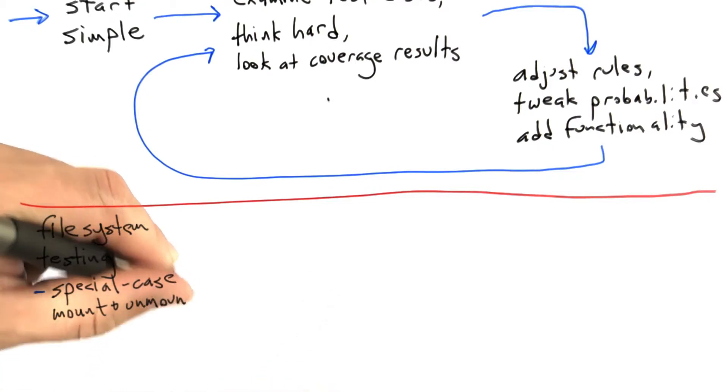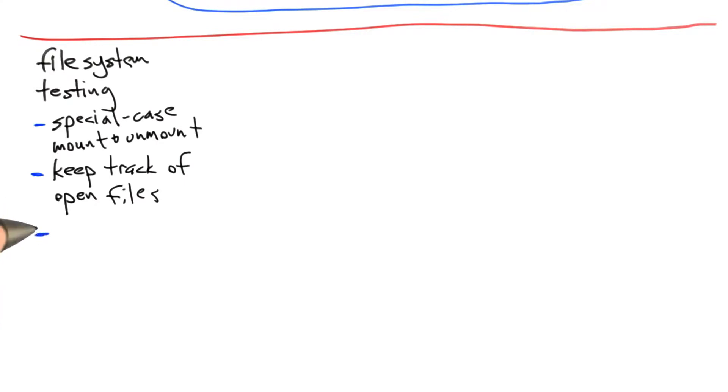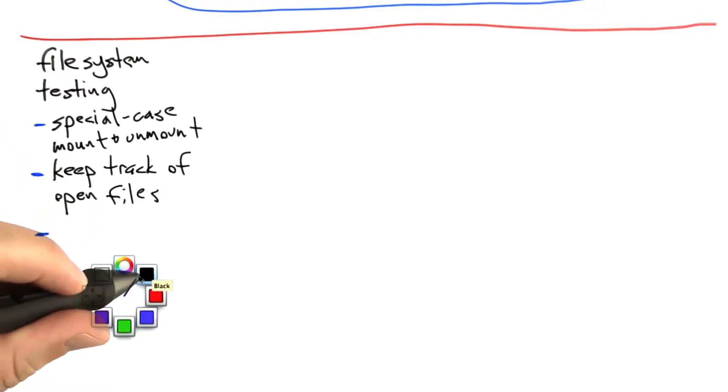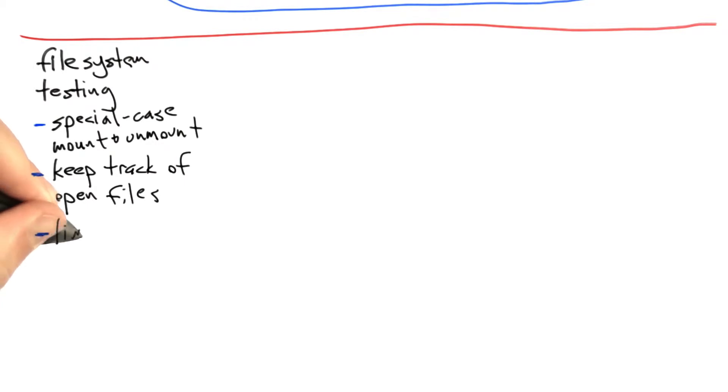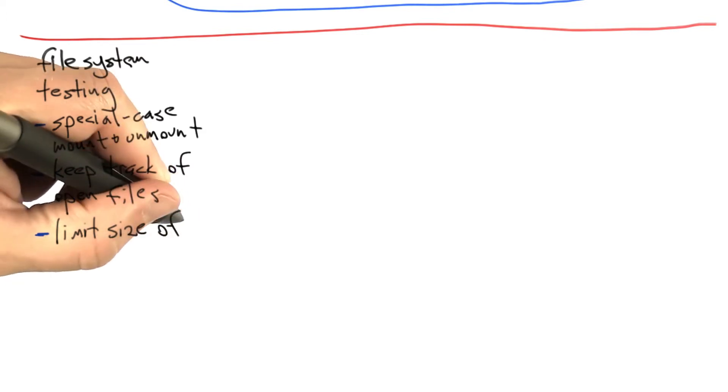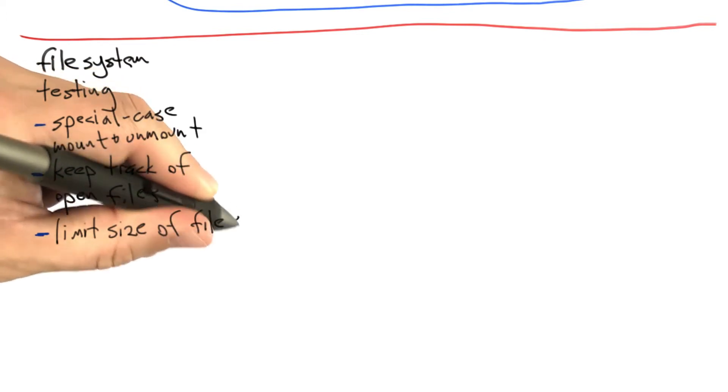So what we're going to do is, for example, special case mount and unmount. We'll also need to special case open and close. One thing we might want to do is keep track in the random tester of the set of currently open files. Just these couple of simple things is probably enough to get a file system fuzzer off the ground.